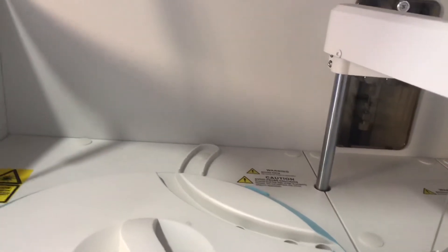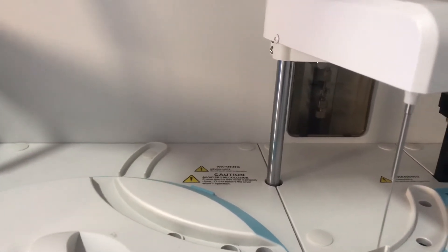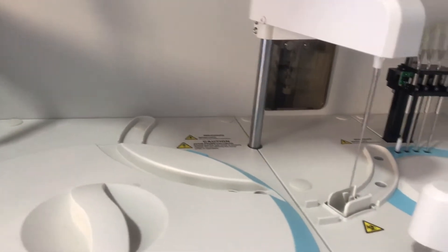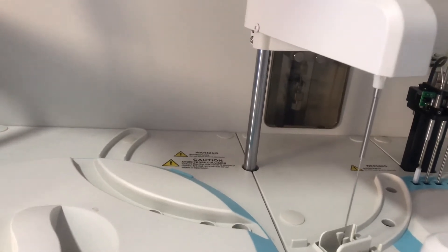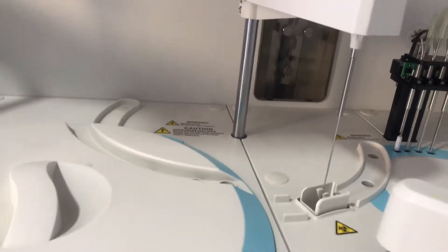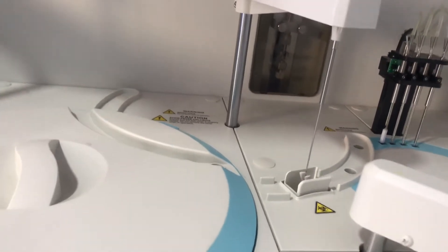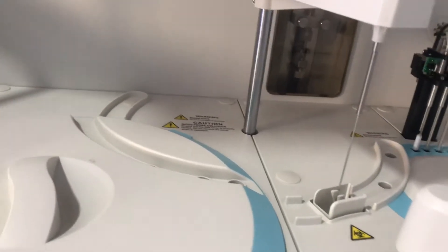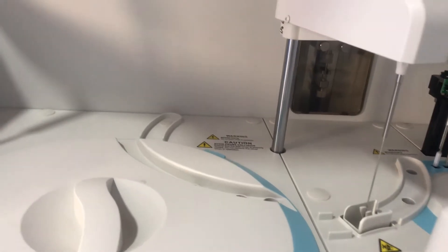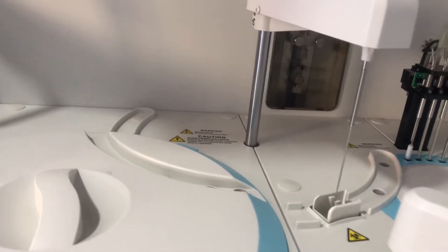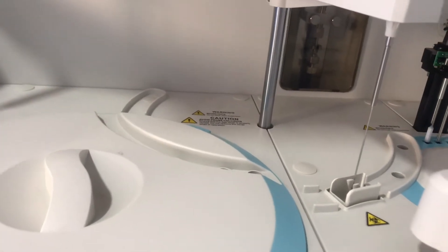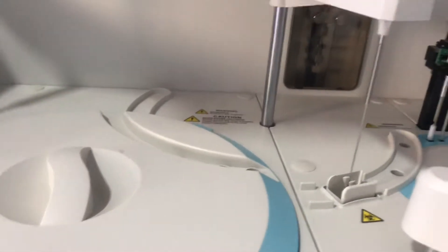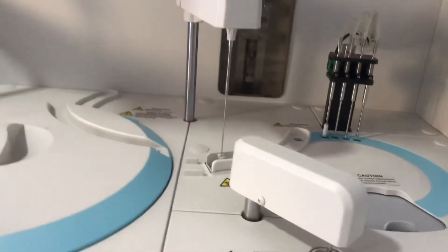Apart from that, it has level detection and tracking. It's able to tell the liquid level in the sample tube or the reagent bottle, and this also helps it to know how low it should go to be able to pick a specified amount of reagent or sample. That's about the aspiration assembly.